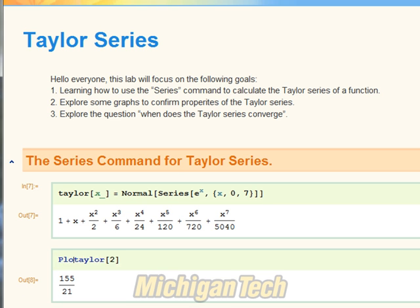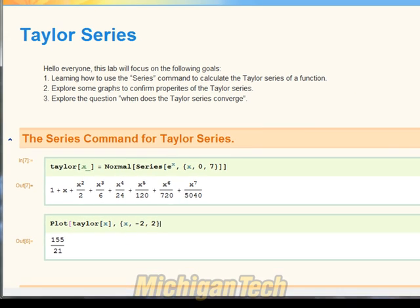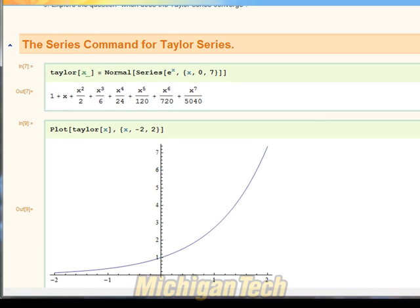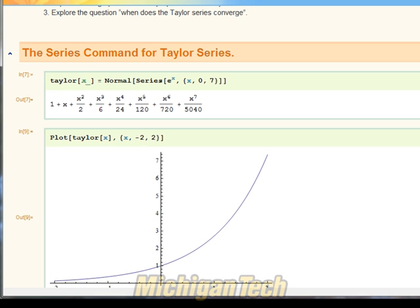Or in fact, another thing I can do is to plot this Taylor polynomial. So how about from x negative two to two? And actually I can see that Taylor polynomial looks quite similarly to e to the x. So I've been able to calculate the Taylor polynomial, and I'll be able to use the Taylor polynomial in this case.